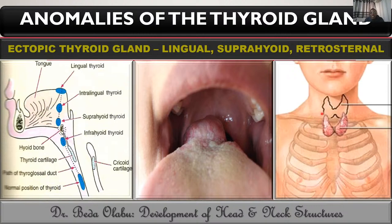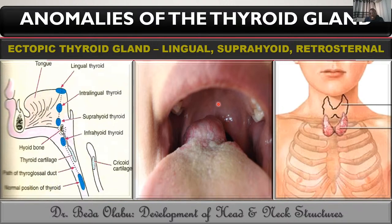If the gland migrated too far beyond its normal position, it would end up within the thorax — behind the sternum — which is called retrosternal thyroid. It is usually found in the superior mediastinum. All of these are ectopic thyroid glands, meaning thyroid glands which are not where they are supposed to be.